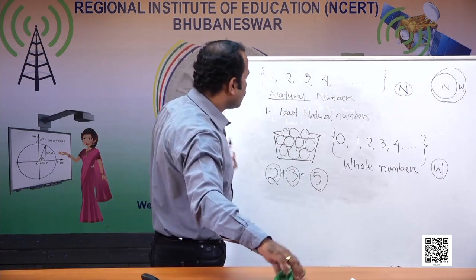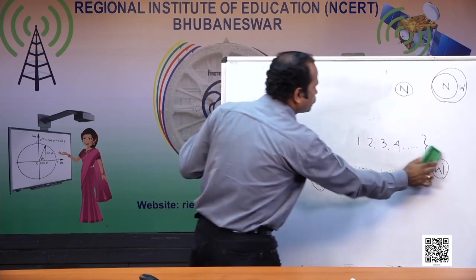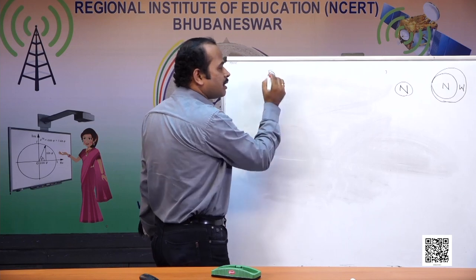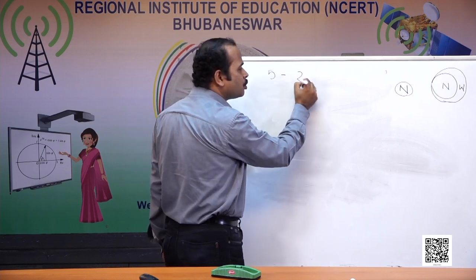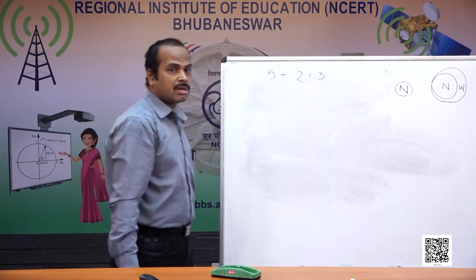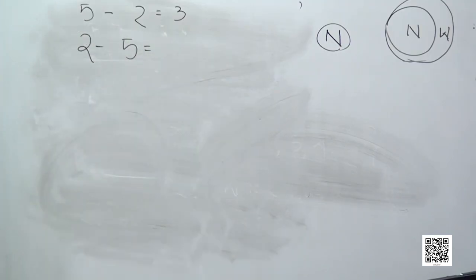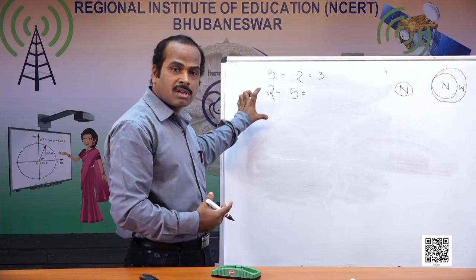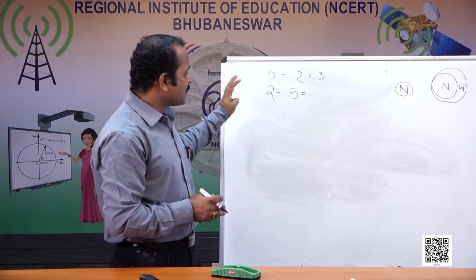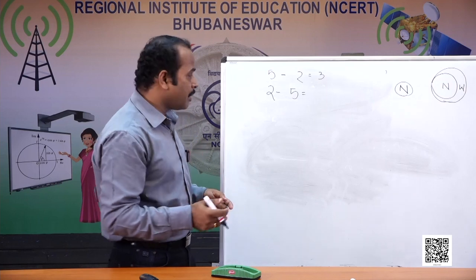Let us check subtraction. Suppose 5 is a whole number; I subtract 2 from it and find 3, which is also a whole number. But if I want to find 2 minus 5, can it be possible in whole numbers? Can I take 5 objects from 2 objects? Definitely I cannot. But this situation can be expressed in a different way, and to express it we need to develop one more number system.